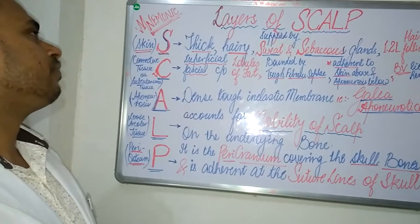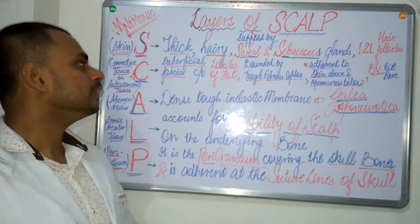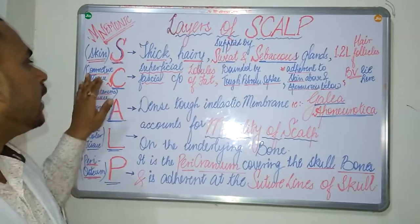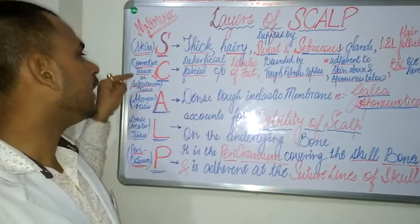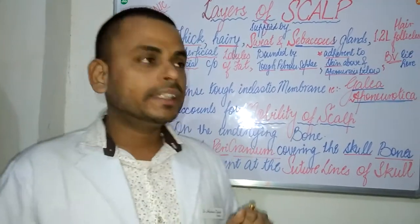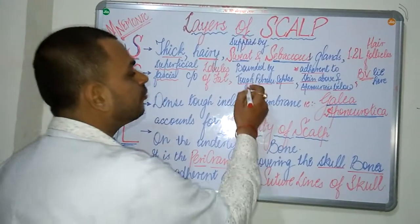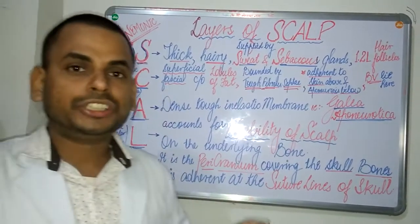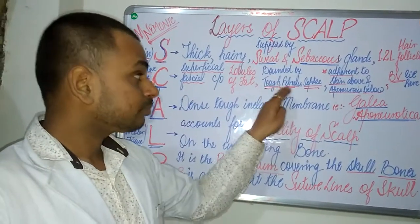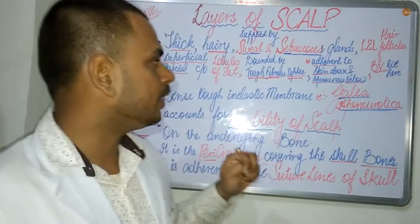The C of SCALP refers to the Connective tissue, also known as the subcutaneous tissue or superficial fascia. This layer lies directly below the skin and consists of lobules of fat bounded by tough fibrous septae — septae being partitions or divisions present in large numbers within the connective tissue.